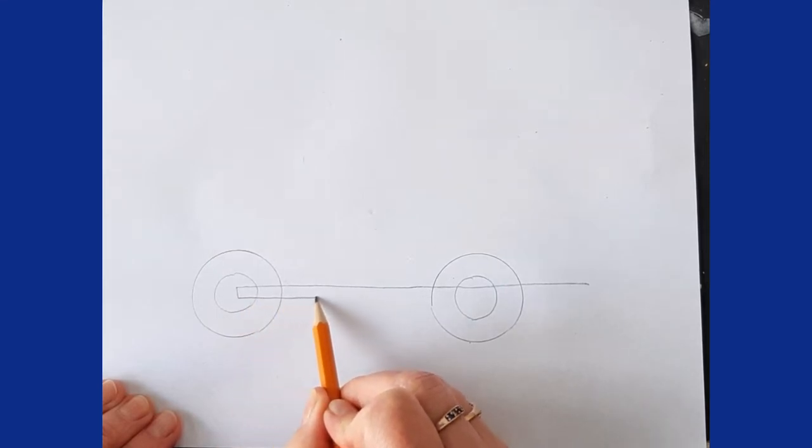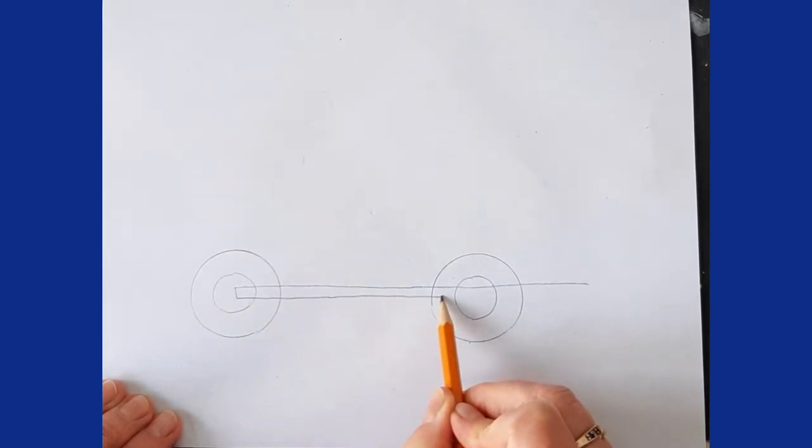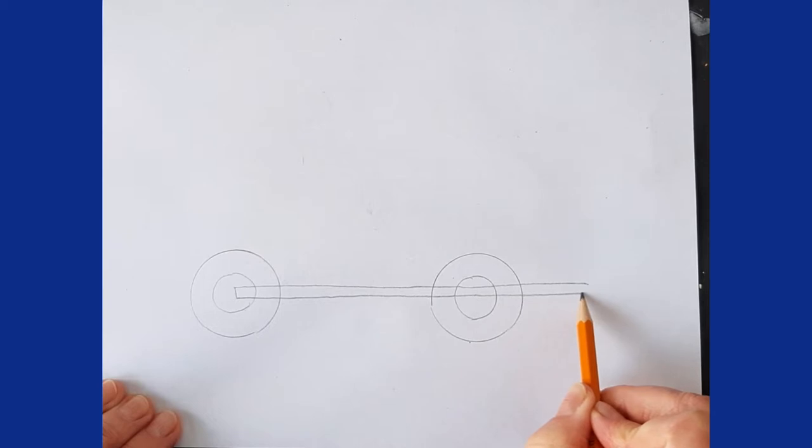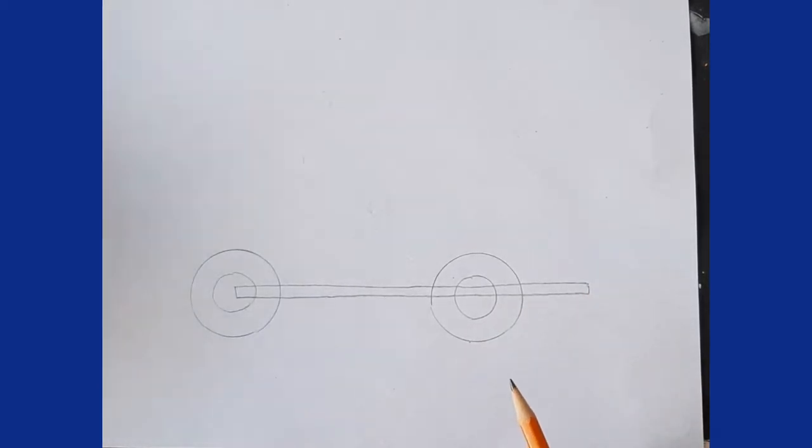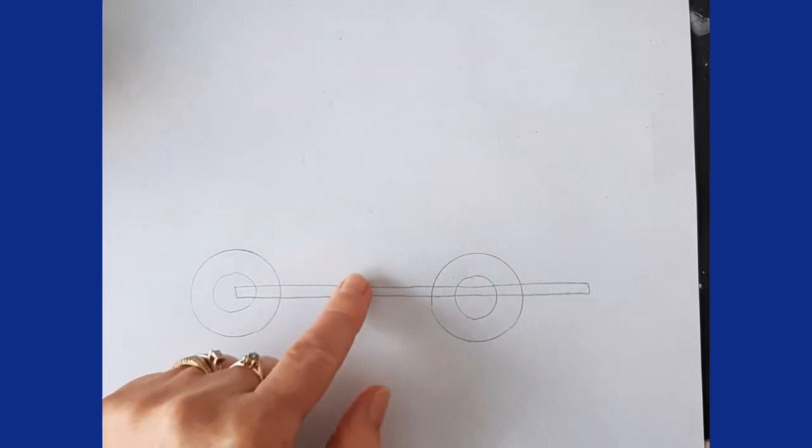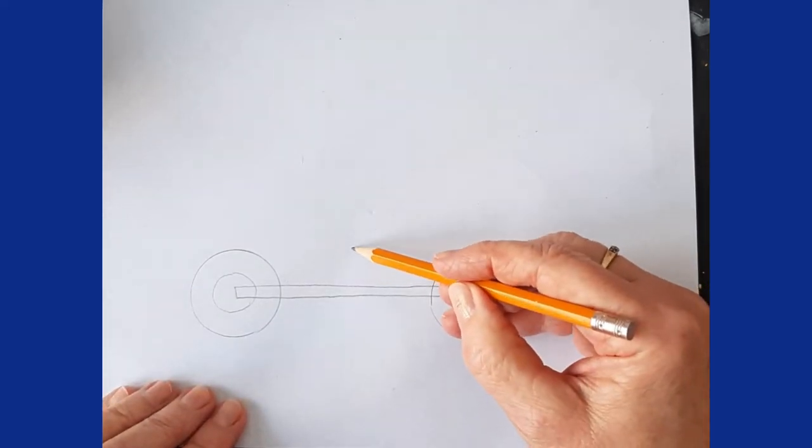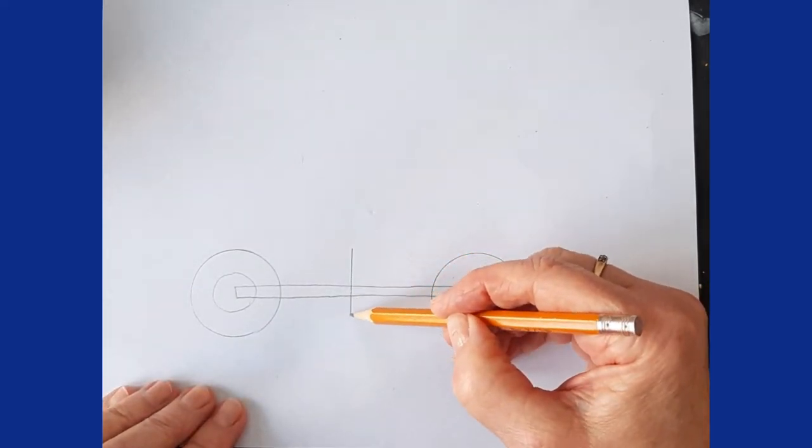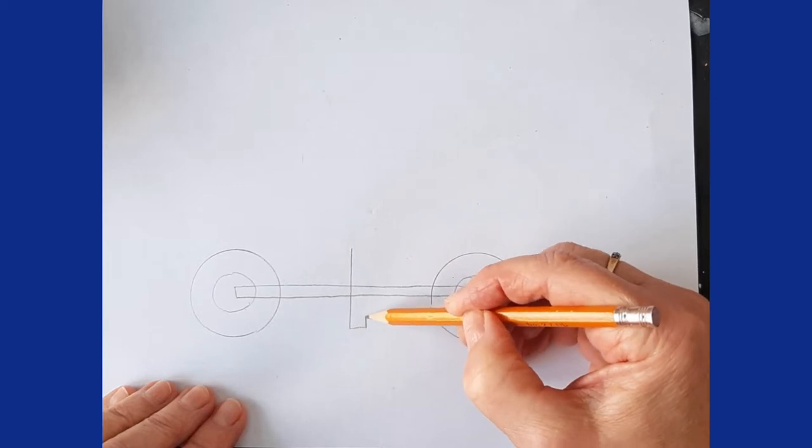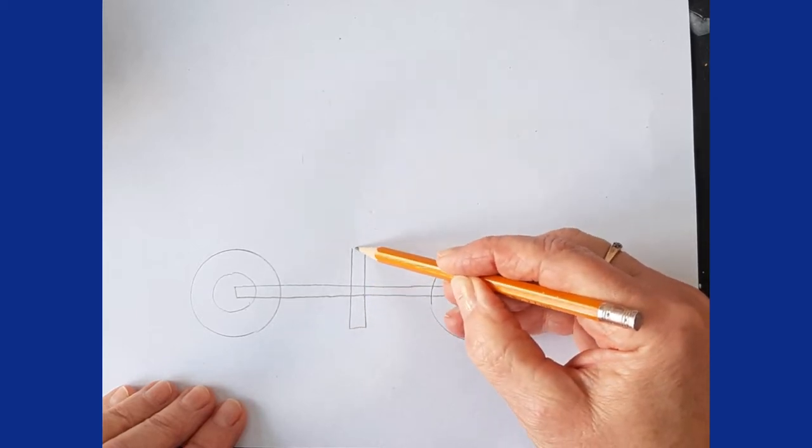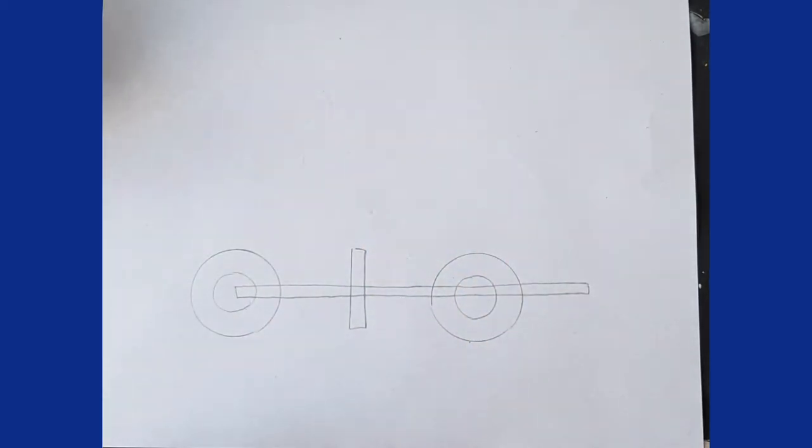We're going basically a big long rectangle like that. Inside here we want to have some places where this is holding on to our bucket, so I'm going to put another rectangle about the distance of the height of these.